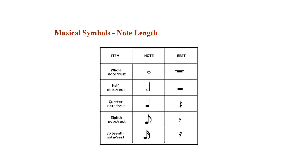Now we'll study what each symbol in the musical score represents, whether it's a note or a rest. Symbols indicate the length of the note, meaning how long we play that particular note. Notes can have a length of a whole note, half a note, one quarter of a note, one eighth of a note, and finally one sixteenth of a note. The same applies to rests. The column on the right represents symbols for rests, and the column in the middle represents symbols for notes.